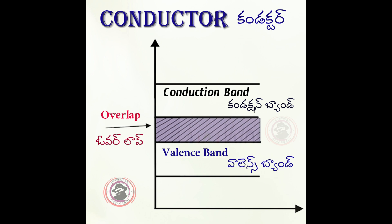The overlap means that the conduction band actually flows into a conductor very well — the electrons easily flow. The valence band and the conduction band are very easy to flow, so electrons easily flow in the conductor.